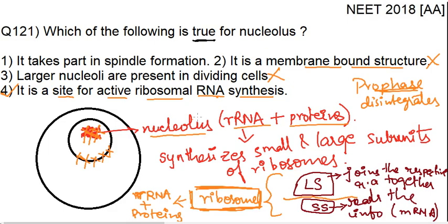Now the first option: it takes part in spindle formation. How can it take part in spindle formation when it is not present in dividing cells? Spindle formation happens in dividing cells, and in dividing cells nucleolus is absent, so it cannot take part in spindle formation. So our answer is option number 4 — it is a site for active ribosomal RNA synthesis.